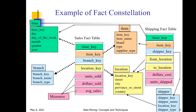Two or more fact tables are combined using common dimension or dimensions. That is nothing but the fact constellation schema. The sales fact table surrounded by its dimension tables looks like a star, and the shipping fact table surrounded by item, location, and shipper dimension tables also looks like a star. This collection of stars is the galaxy schema, also called the fact constellation schema.